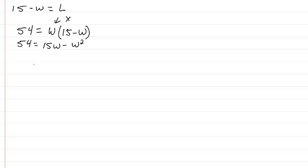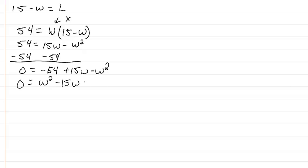So now we have 54 equal to 15W minus W squared. We want everything on one side, so I'll subtract 54. So we have 0 equal to negative 54 plus 15W minus W squared. We need to have it in order, and it would be a lot easier if we did not have a negative W squared. So we're going to multiply by a negative. So we have W squared minus 15W plus 54.